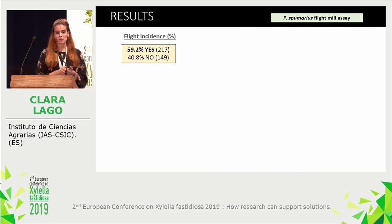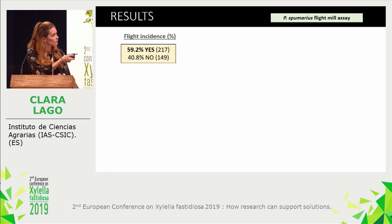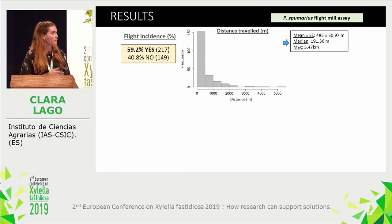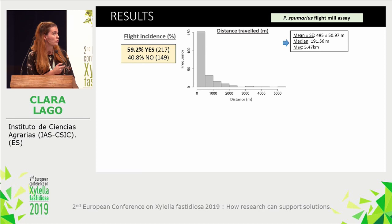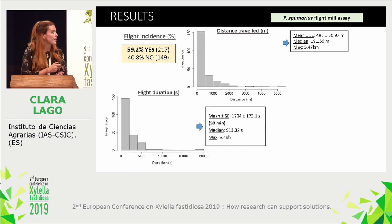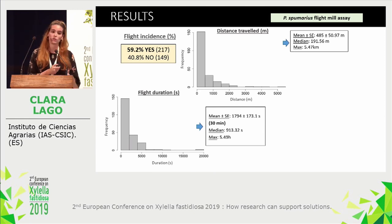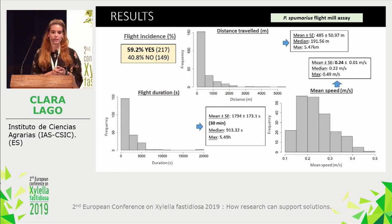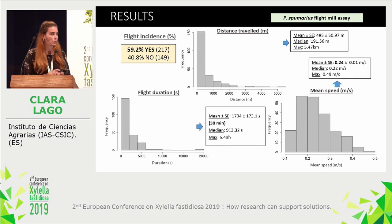We found that nearly 60% of individuals were able to fly. The mean distance traveled was 485 meters, with a maximum of 5.47 kilometers. The mean flight duration was about 30 minutes, with a maximum of 5.49 hours. The mean speed was 0.24 meters per second, with a maximum of 0.49 meters per second.